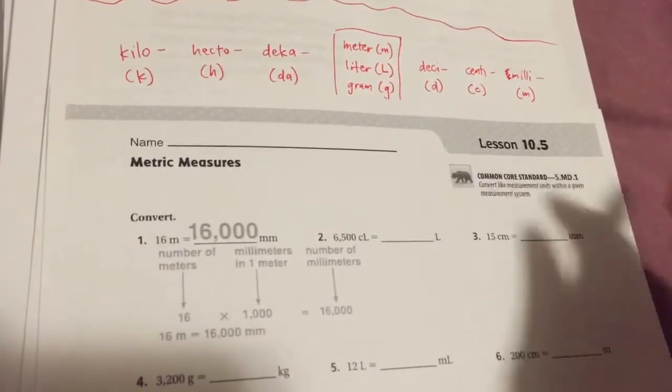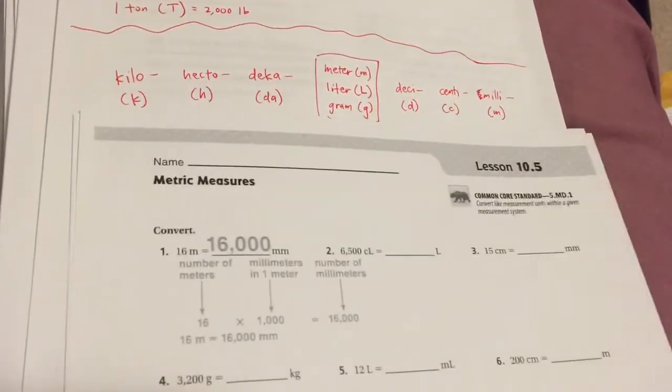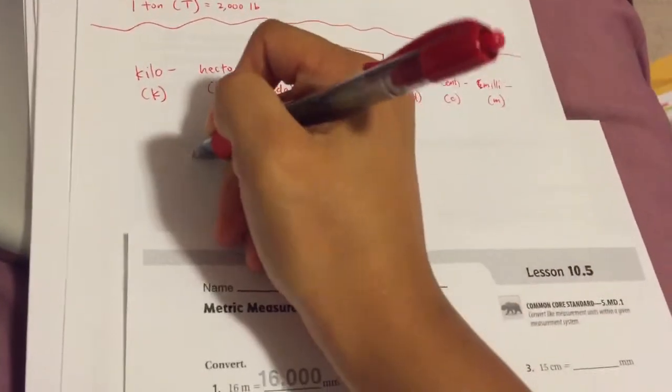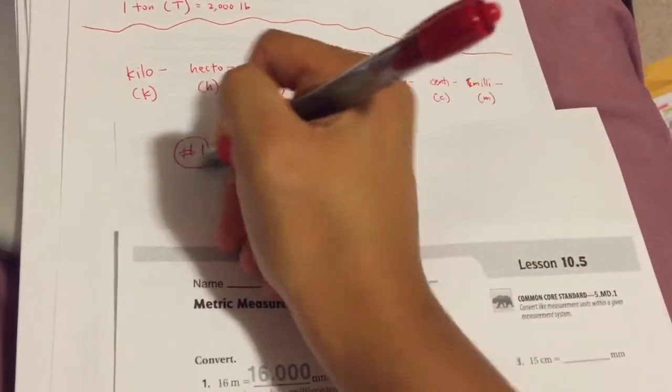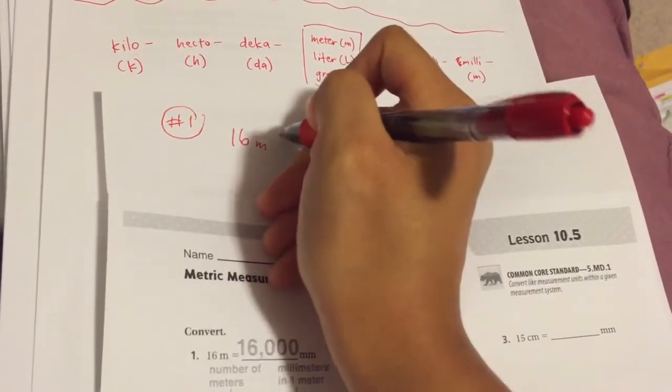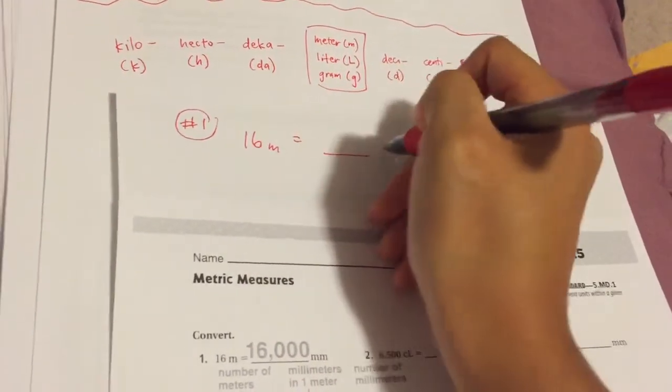So our first step is, look at number one. Number one is asking, 16M equals blank MM.